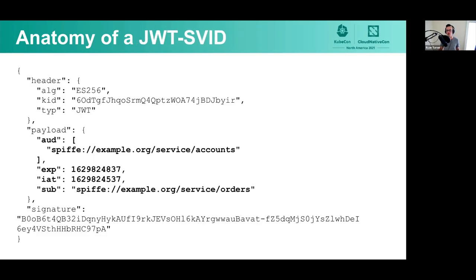Here's an example of a JWT SVID. Very similar — we have a subject claim, the SUB claim, which has the SPIFFE ID of the service this token is issued for. We also have an AUD claim representing the list of audiences this token is valid for — in this case, the account service. There are also EXP (expiration time) and IAT (issued at) claims, and you'll see these values only differ by 300 seconds, which is five minutes. This highlights that this is a short-lived identity — very powerful, because if the identity was compromised, it would only be valid for up to five minutes.